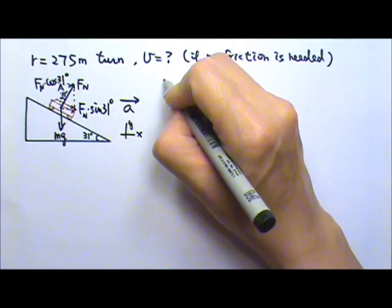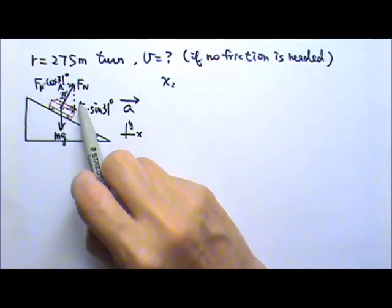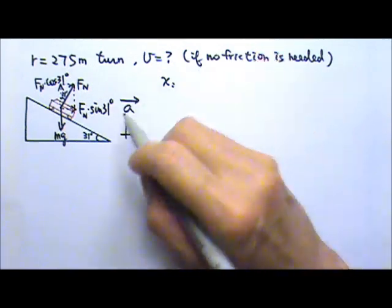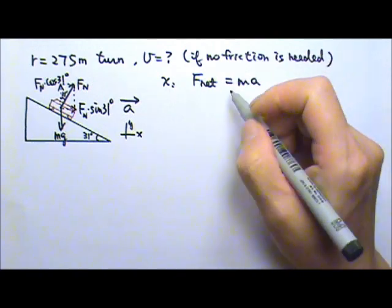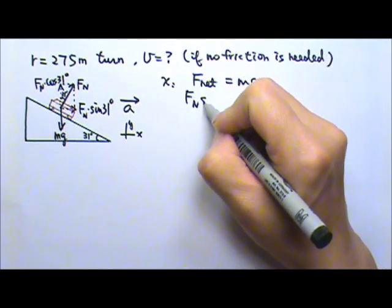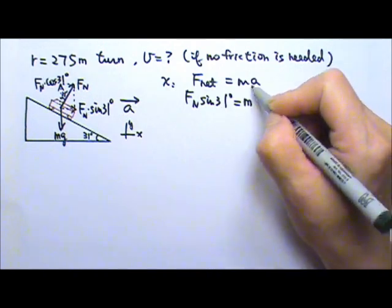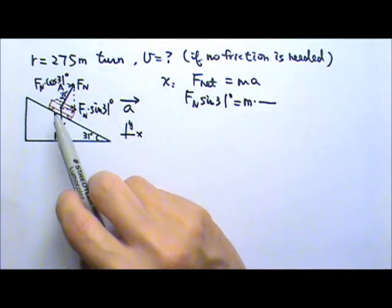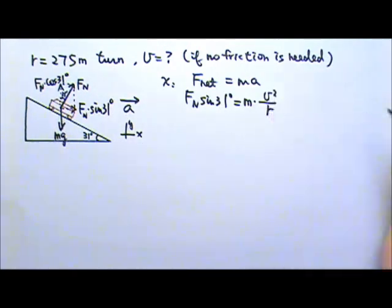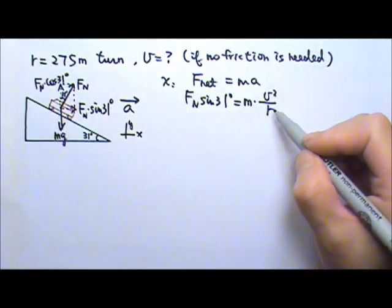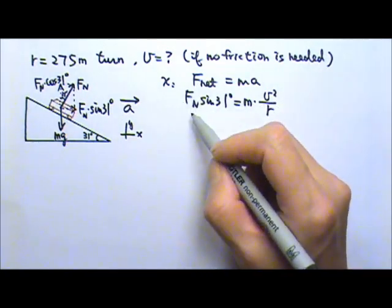Okay, now let's write the force equation. In the x direction, this is the only force in the x direction. So the net force equals to Ma would just be Fn sine 31 degrees equals to Ma. The object, the car, is doing circular motion. So acceleration is V squared over R. Now we have R to plug in. We're looking for V. And we don't have M. We don't have normal force.